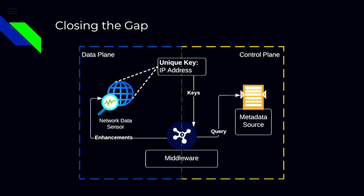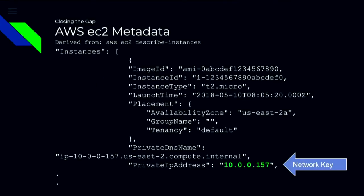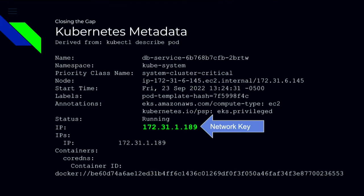So how do we close that gap — how do we bridge those two planes together? The idea is just some piece of middleware that uses the IP address as its key. The IP address exists in both planes, and that's where the altitude really comes into play. If you're grabbing data at the altitude using the IP address that the control plane knows about, you can easily marry that data pair back together, add that enrichment to Zeek, and ship it out. Here's an example of metadata available from AWS — describing an EC2 instance gives you this big JSON blob, and the thing we really care about is the network key: the private IP address, the VPC IP address. Same exact thing in Kubernetes, with even more detail in the metadata.